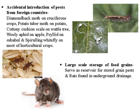Accidental introduction of pests from foreign countries: diamondback moth on cruciferous crops, potato moth on potato, cottony cushion scale on citrus tree, woolly aphid on apple, San Jose scale on subabul, and spiraling whitefly on most agricultural crops were introduced from other countries to India and established here as major pests of those particular crops. Large-scale storage of food grains leads to infestation of stored grain pests, and even rodents like rats have great potential to damage stored grain products.